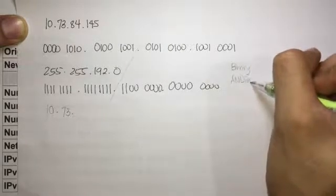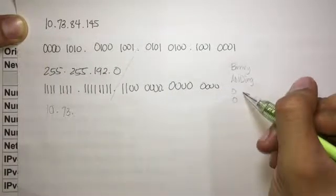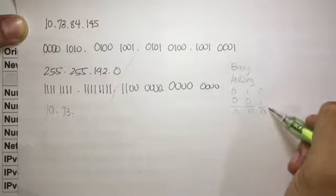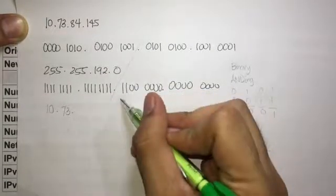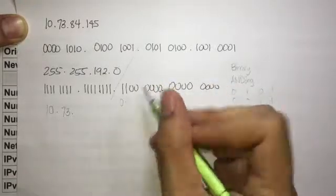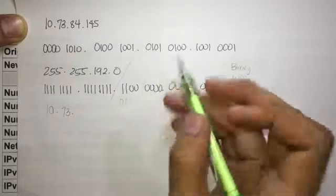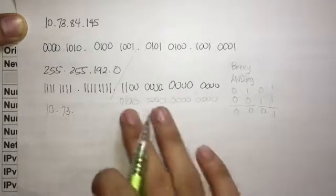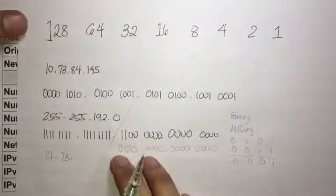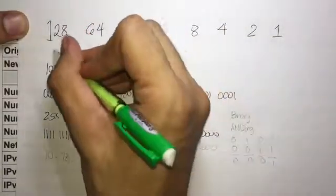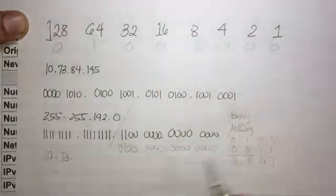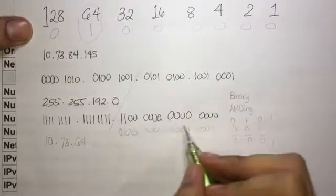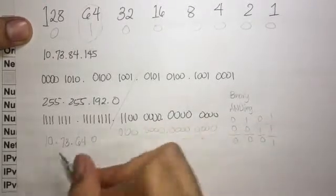Using binary AND: 0 AND 0 = 0, 1 AND 0 = 0, 0 AND 1 = 0, and 1 AND 1 = 1. Applying this to the third octet, the result is 01000000 in binary. Converting that to decimal: 01000000 equals 64. The fourth octet ANDs to all zeros, giving 0. So the network address is 10.173.64.0.